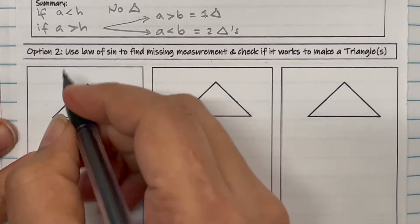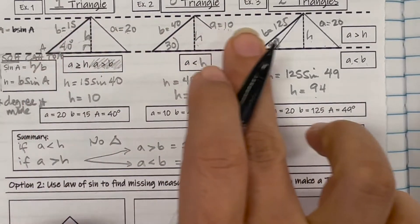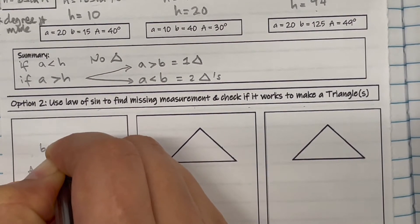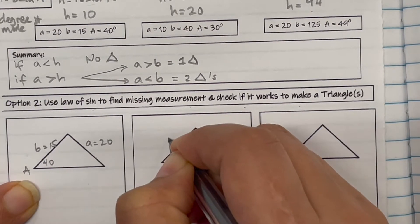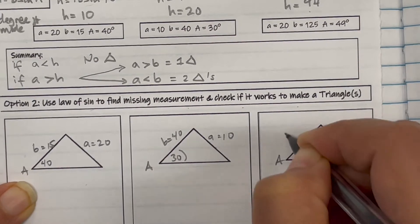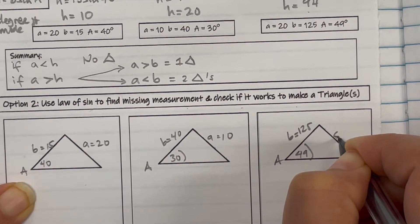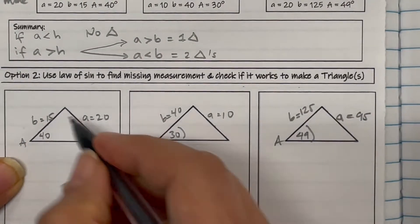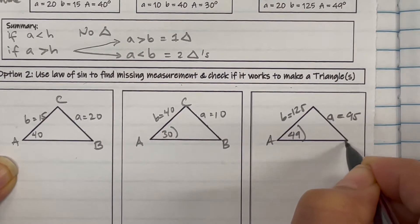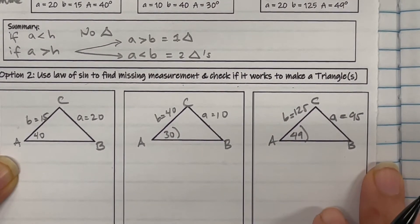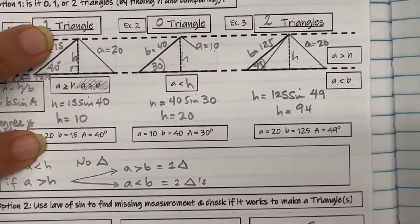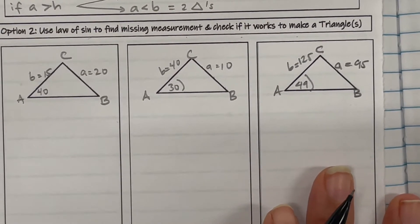For option two, you're going to use the law of sines to find the missing angle, then determine if it's a valid triangle. I'm going to copy down these triangles with their measurements. Example one: A equals 40, a equals 20, B equals 15. Example two: A equals 30, B equals 40, a equals 10. Example three: A equals 49, B equals 125, a equals 95. I'll label each triangle so B is across from capital B, and the remaining angle is C. Then I'll assume it makes a triangle and verify.